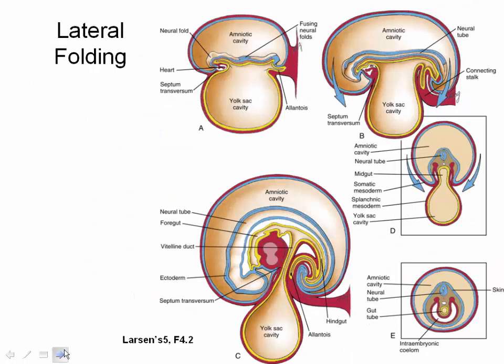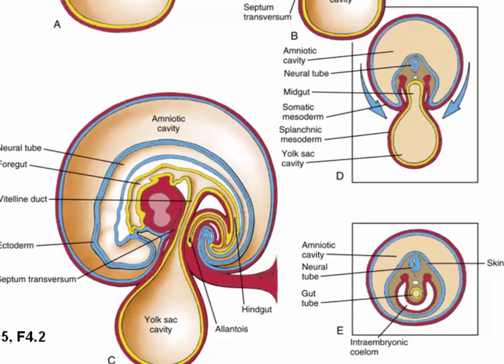Now we move on to lateral folding, exhibited in the two illustrations enclosed within boxes. These two images depict a cross-sectional view of the embryo, meaning a horizontal slice that divides the embryo into cranial and caudal halves. Lateral folding is primarily the product of rapid growth of the ectodermal and mesodermal germ layers. As these layers expand, they begin to fold toward the midline and fuse. A small section of the body wall remains open in the abdominal region where the developing umbilical cord attaches, though umbilical cord development is not seen in this image as the cut is either too superior or inferior to its location.